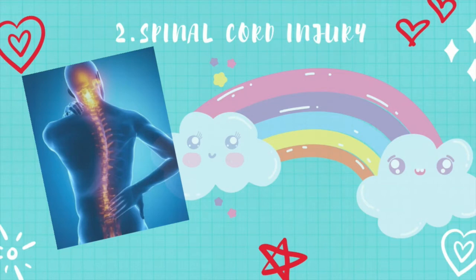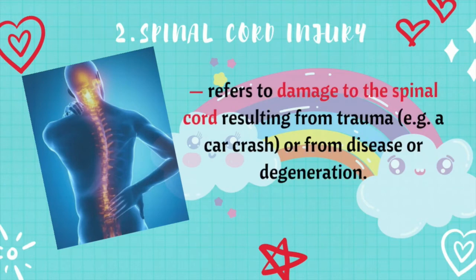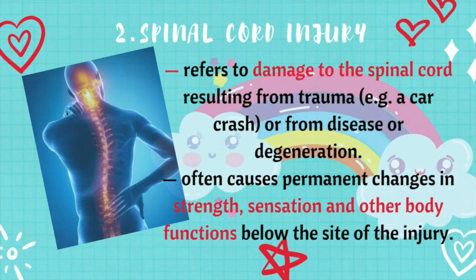Let's define first spinal cord injury. Spinal cord injury refers to damage to the spinal cord resulting from trauma like a car crash, or from disease or degeneration — damage to any part of the spinal cord or nerves at the end of the spinal canal, or cauda equina. It often causes permanent changes in strength, sensation, and other body functions below the site of the injury.